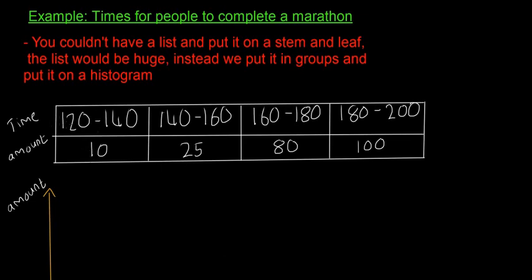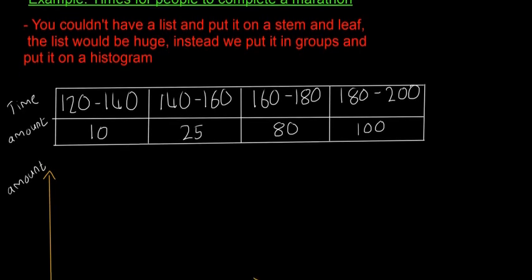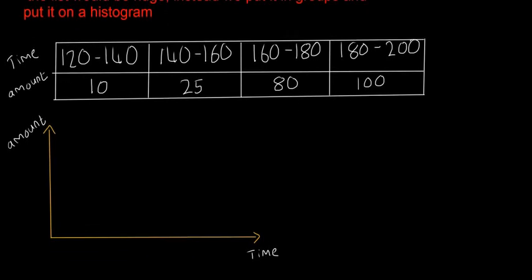For example, look at the top here. We have the time in minutes: 120 to 140, 140 to 160, and then at the bottom, the amount of people who finished in that bracket. This is the type of data you could easily plot on a histogram.